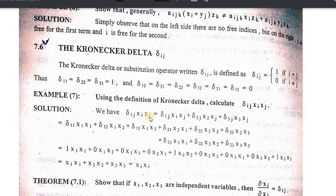Taking i equal to one, two, and three, the expression expands as: delta 1j x1 xj plus delta 2j x2 xj plus delta 3j x3 xj. Here i is the variable whose value will be equal to one, two, and three.